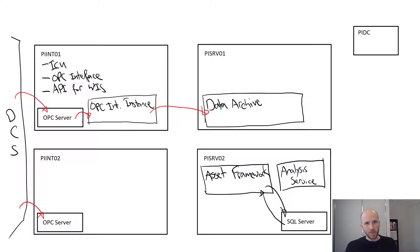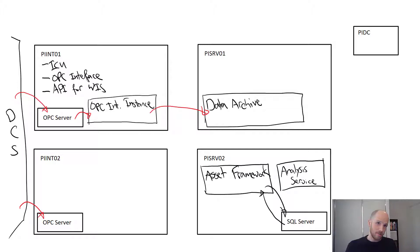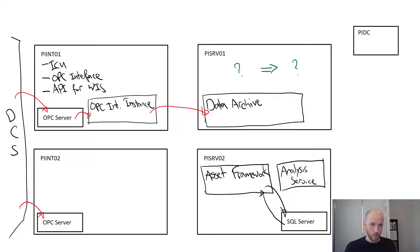We'll go into more detail here a little bit later in the course, but for now we're aiming to have a service connecting to the data archive. What do you think we need to configure before it can connect? A mapping. Let's talk about that.